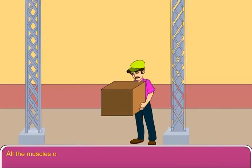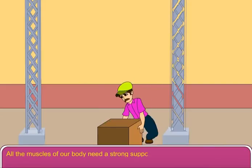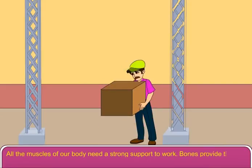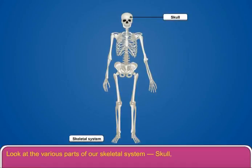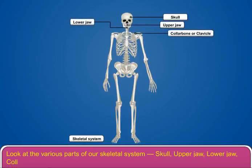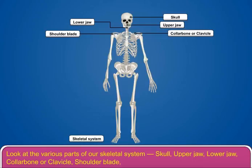All the muscles of our body need a strong support to work, and bones provide that support. Let us look at the various parts of our skeletal system: skull, upper jaw, lower jaw, collarbone or clavicle, shoulder blade, breastbone, and ribs.